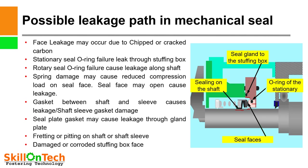Face leakage may occur due to chipped or cracked carbon — if our mating faces are cracked, that may also cause leakage. Stationary seal O-ring failure can leak through the stuffing box, and rotary seal O-ring failure causes leakage along the shaft. Spring damage may cause a reduction in compression load on the seal face, causing the seal face to open and leak. A gasket between the shaft and sleeve, or shaft sleeve gasket damage, can also cause leakage. Fretting or pitting on the shaft or shaft sleeve may similarly cause leakage.